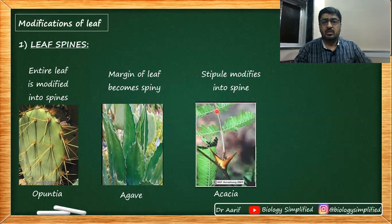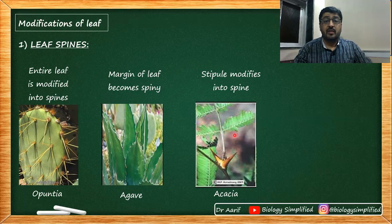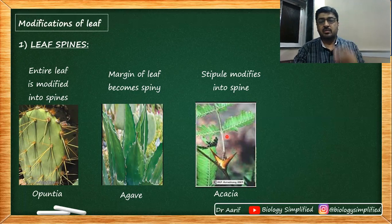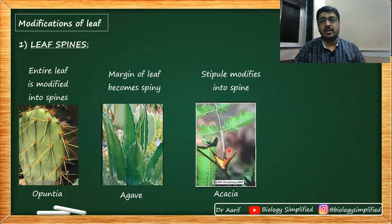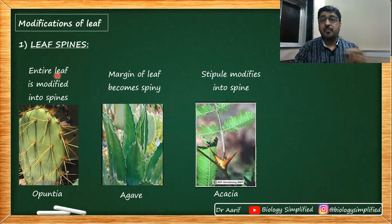Looking at Acacia's leaf — it is a compound leaf, and the leaflet is divided further into all leaflets. The Acacia leaf is bipinnately compound. Just an observation — sometimes you can pick up these points from images and diagrams that are not explicitly mentioned. If an image or diagram in NCERT shows a particular point but doesn't mention it, you have to pick up these small things and make a mental note. So, all three — entire leaf becoming spine, margin of leaf becoming spine, and stipule modifying into spine — are modifications for reducing or eliminating transpiration to save water.